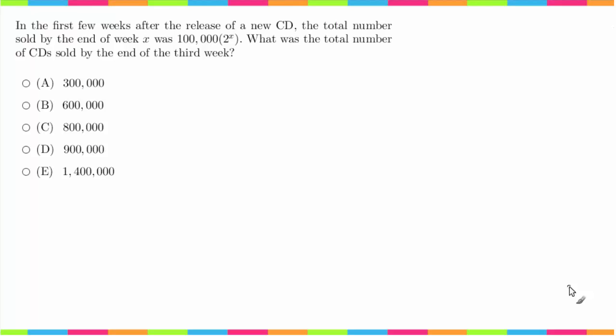The first thing we have to recognize is that X stands for the number of weeks by the end of that week. So what they are really asking us is what is the Y value when X equals 3, and this is why Y is equal to 100,000 times 2 to the X.